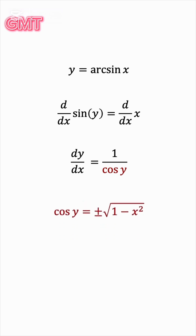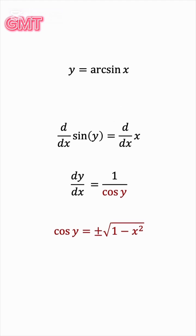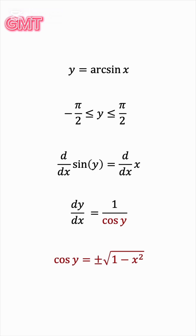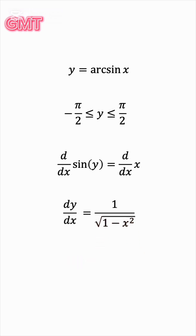Do we need both the positive and negative versions of the square root? y is the input of cosine, but remember, y is defined as arc sine x. And the range of the arc sine function is negative pi over 2 to pi over 2. The cosine is positive on this interval, so we don't actually need the negative square root. So, with this, we're done.